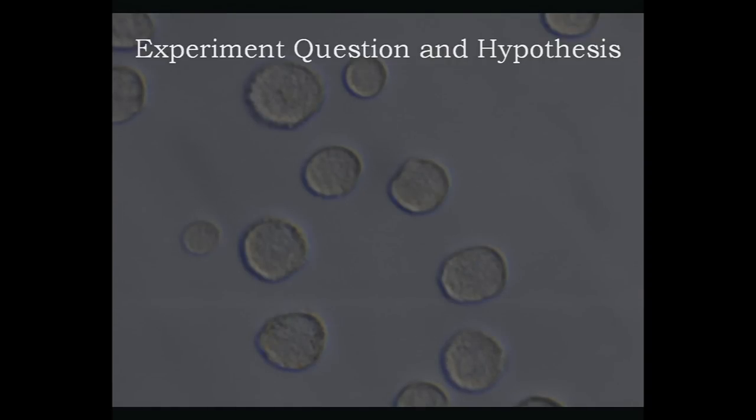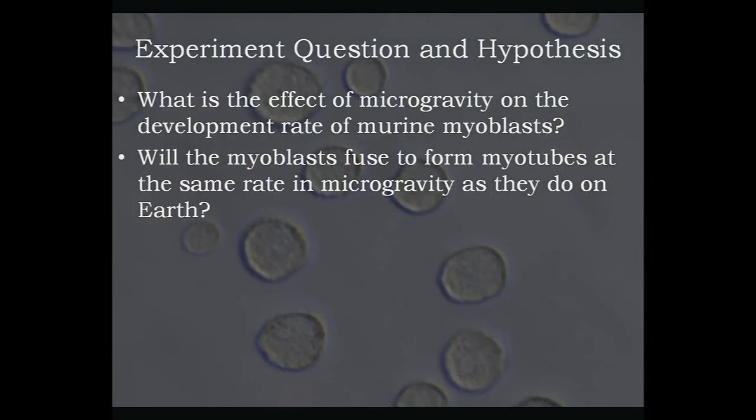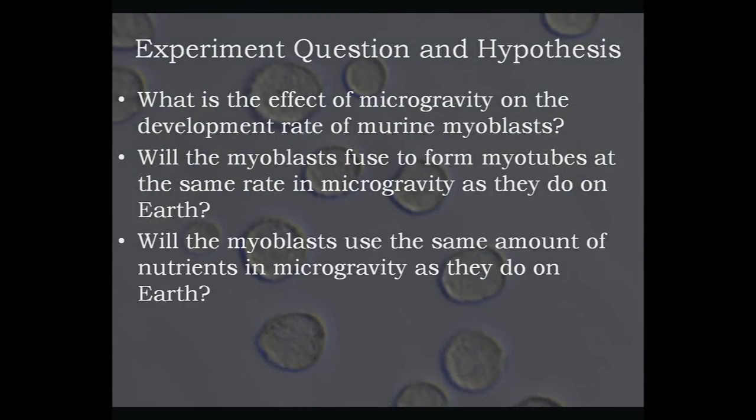Our original experiment question was: what is the effect of microgravity on the development rate of murine myoblasts? This question was a qualitative question, and we needed it to be a quantitative question, meaning we had something to measure. So our new question was: will the myoblasts fuse to form myotubes at the same rate on Earth as they do in microgravity? We are now measuring if the myoblasts use the same amount of nutrients on Earth as they do in microgravity.